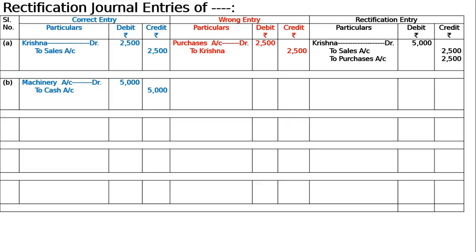Part B: Rs. 5000 paid for freight on machinery purchase was debited to freight account as Rs. 500. Freight on machinery purchase — whatever you pay on new machinery — is to be debited to machinery account. Hence the correct entry is machinery account debited 5000 to cash, since we are paying cash.